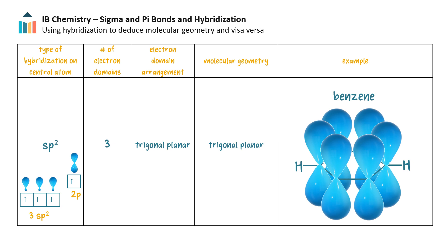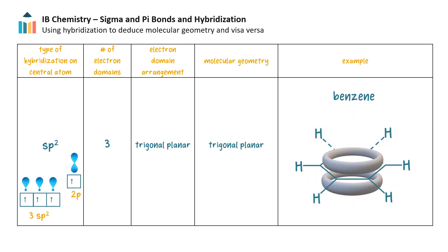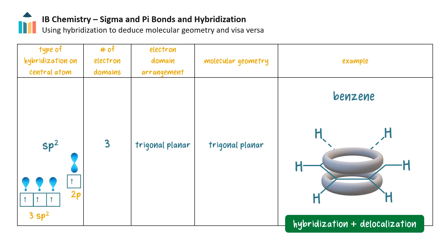These orbitals overlap laterally or side-on, forming rings of delocalized pi electrons above and below the plane of the molecule instead of three sets of localized pi bonds. Sp2 hybridized carbons and delocalized pi electron clouds are part of the true resonance hybrid structure of benzene.